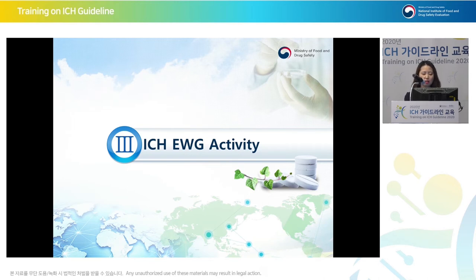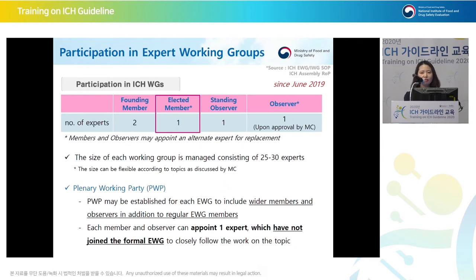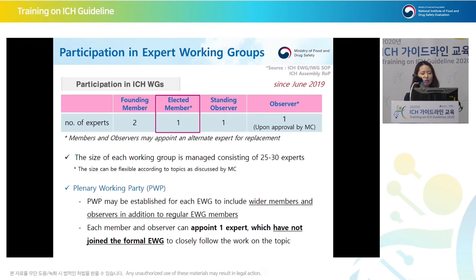Now I will explain what EWG does. For guidelines, EWG actually creates drafts or conducts revisions. So EWG is a very important group at ICH. As membership grows, the number of EWG members grows, making smooth conversation difficult. So in order to have better operation, ICH decided to limit the size of the EWG. Now about 25 to 30 experts participate in one EWG.